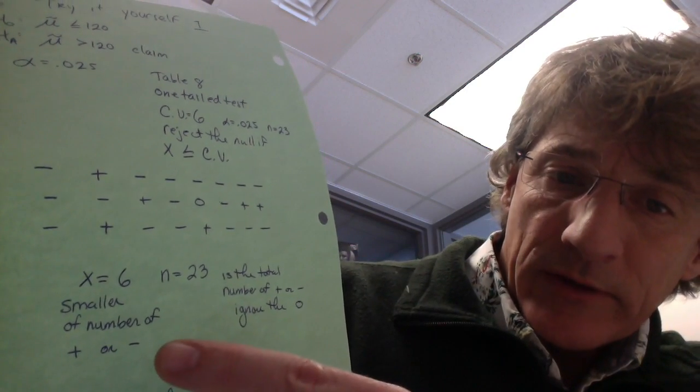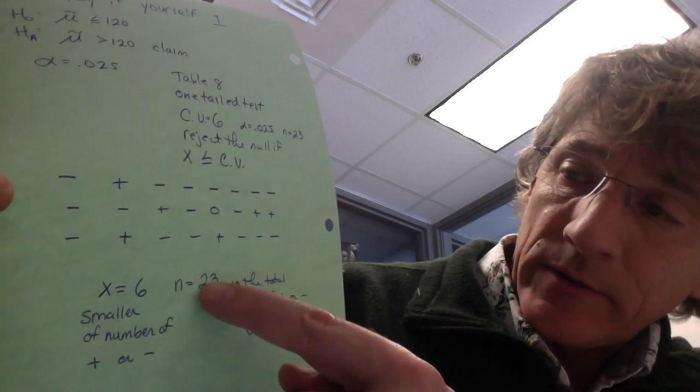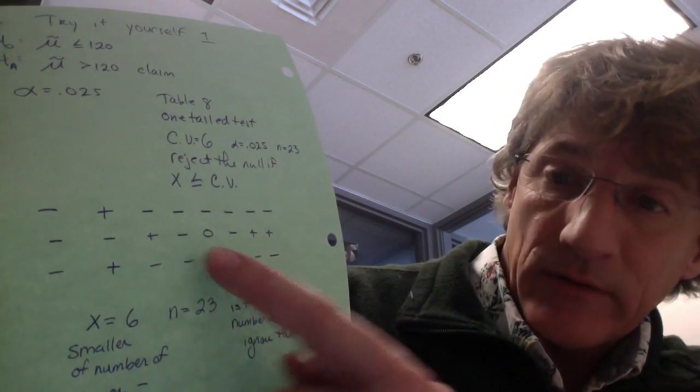It is the smaller of the number of positives or negatives. Okay, again, our n is 23, because there's 23 things that aren't the zero.